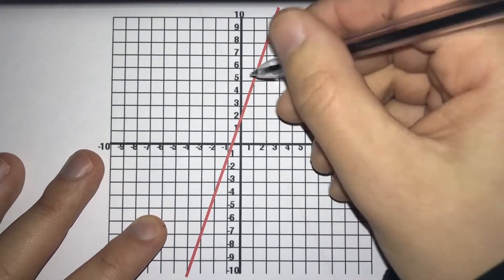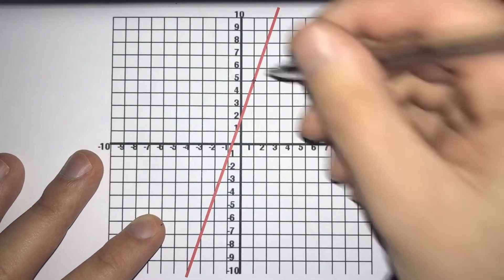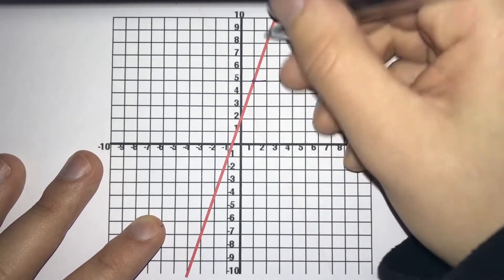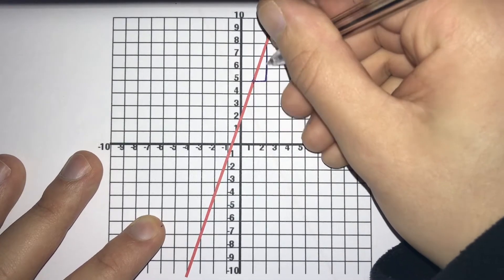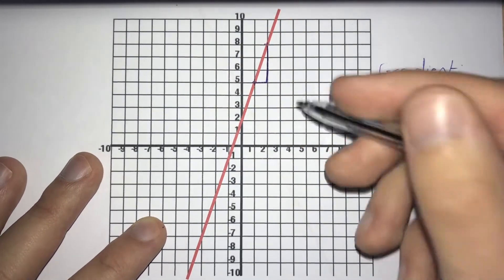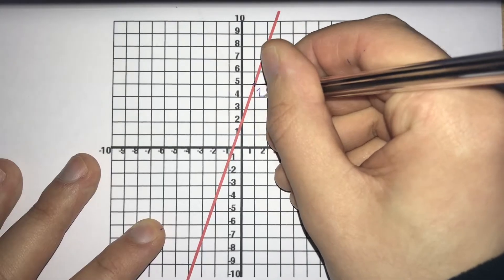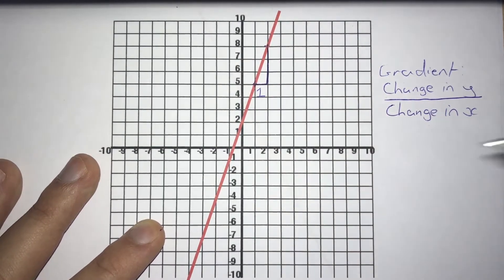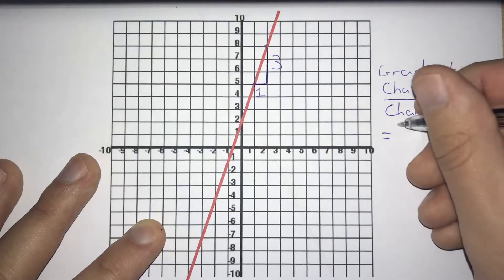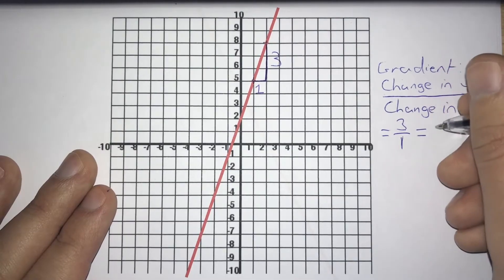We can do this by finding a point where our line goes through one of these cross sections — where it intersects a cross on our grid. If we start here, go across 1 and then back up to our line at another one of these cross points, we've drawn a nice little triangle. We see that this triangle has an x change of 1 — we've gone along 1 on our x-axis and up 3 on our y-axis. So our change in y is 3 and our change in x is 1, and 3 divided by 1 gives us a gradient of 3.